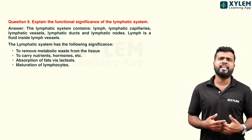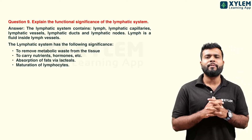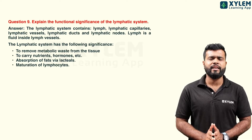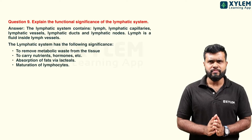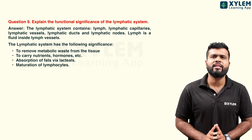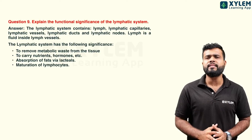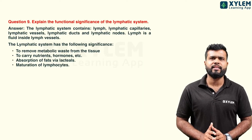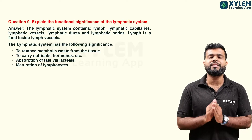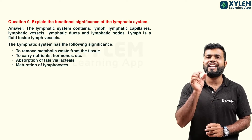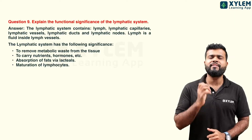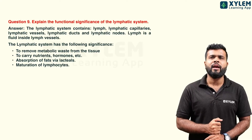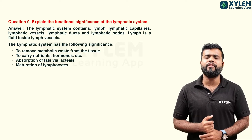Next question: explain the functional significance of the lymphatic system. When fluid oozes out of our blood vessels, it is called lymph. This lymph removes waste materials from tissues. Lymph is collected and returned via the lymphatic system, and lymphocytes are found in lymph.